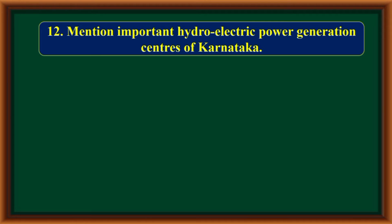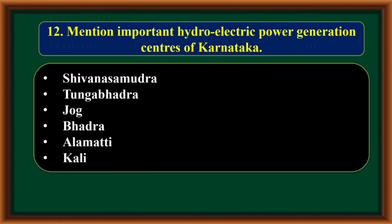Important hydroelectric power generation centers of Karnataka: Shivanasamudra, Tungabhadra, Jog, Bhadra, Almatti, and Kaali.